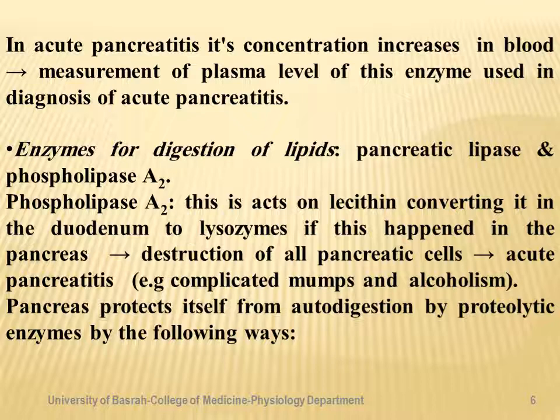Enzymes for digestion of lipids include pancreatic lipase and pancreatic phospholipase A2. Pancreatic phospholipase A2 acts together with lecithin released from the mucosa of the duodenum, converting it to lysolecithin. This occurs in the second part of the duodenum. If it occurs inside the pancreas, it leads to destruction of all pancreatic cells and severe acute pancreatitis — for example, in cases of complicated mumps or alcoholism. The pancreas protects itself from autodigestion by two important mechanisms.